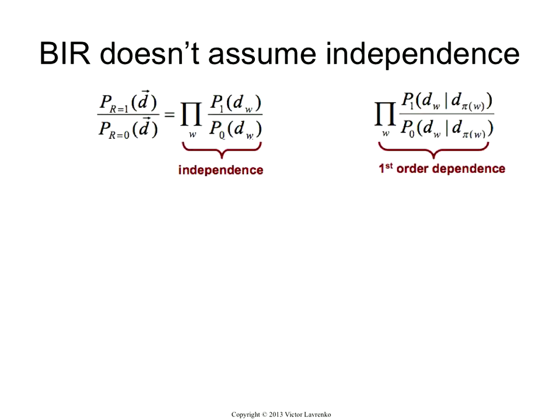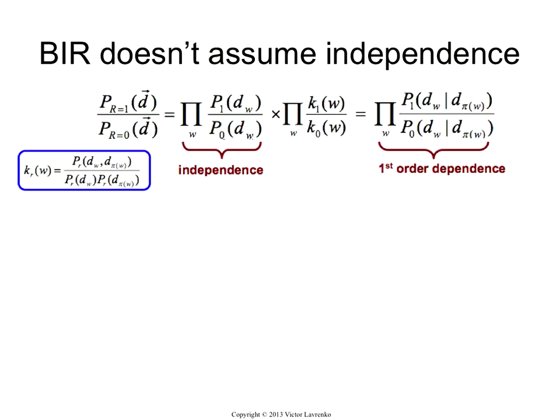So this is assuming independence; this is not assuming independence. Under what condition would these things be equivalent? You can basically figure out that what's different between them is a pair of factors. These factors are actually related to the mutual information between the terms. This is dw conditioned on the parent; this is dw by itself. The way you compute the conditional probability of dw given the parent is you take the joint probability of dw and the parent occurring or non-occurring, and you divide it by the probability of the parent itself. That's just the definition of conditional probability — conditional is joint divided by the probability of the parent.